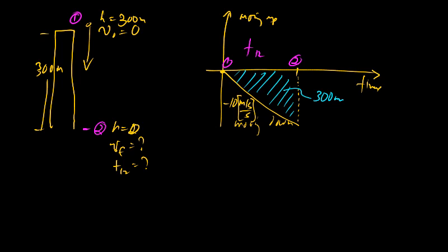So the area under the curve is 300 meters, and this number here, the height of the triangle is the final speed of the object as it strikes the ground. So from just the area of a triangle, 300 meters is equal to one-half the base times the height, which in this case is the final speed.